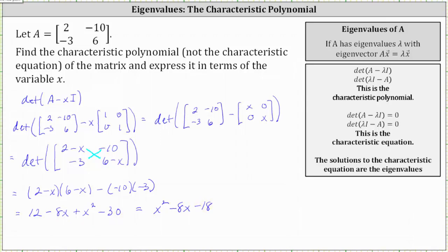This is the characteristic polynomial for matrix A. If we did want to find the eigenvalues of matrix A, we would set the characteristic polynomial equal to zero and solve. I hope you found this helpful.